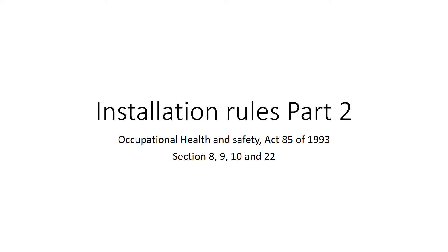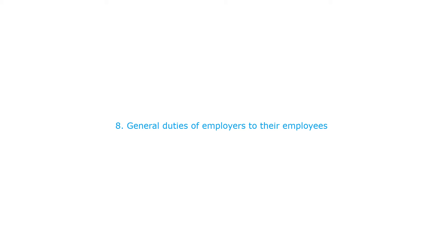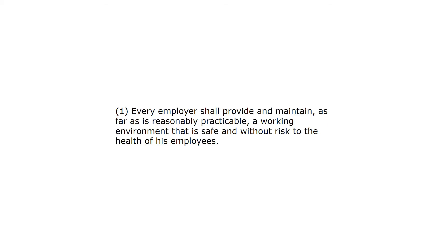Installation Rules Part 2. Occupational Health and Safety Act 85 of 1993, Section 8, 9, 10 and 22. Section 8: General Duties of Employers to Their Employees. Every employer shall provide and maintain, as far as is reasonably practicable, a working environment that is safe and without risk to the health of his employees.